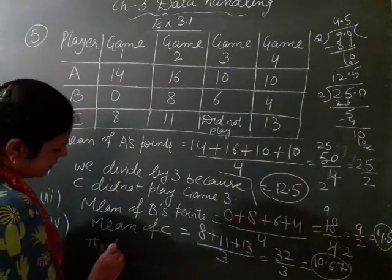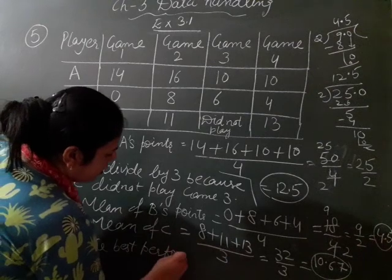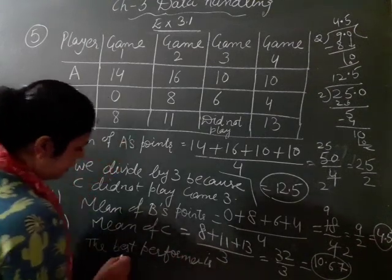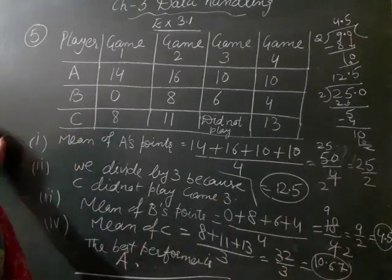The best performance is the best performer is A. That is our answer. A is the best performer. Clear?